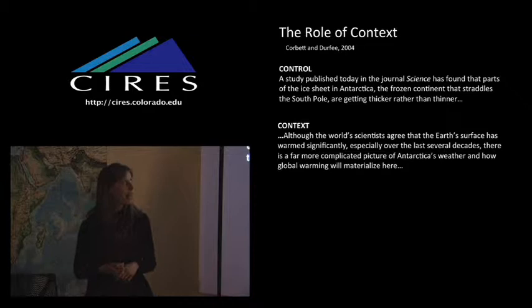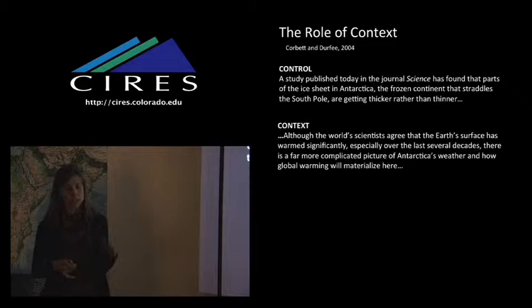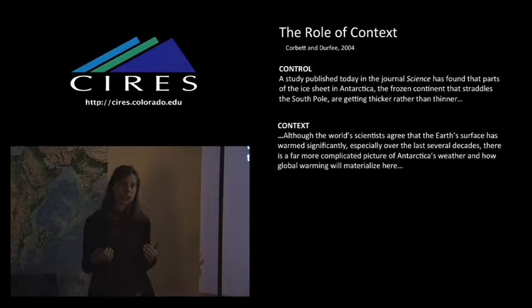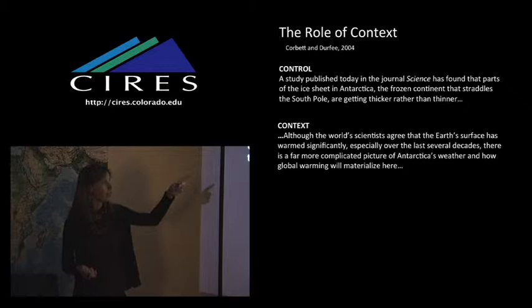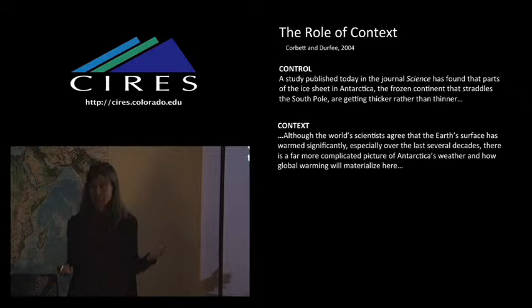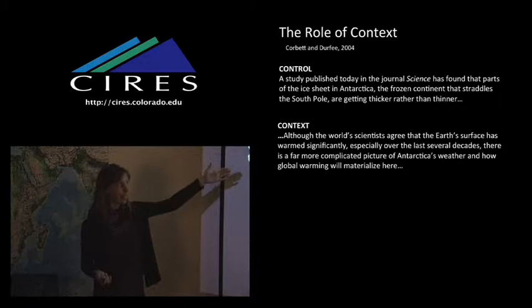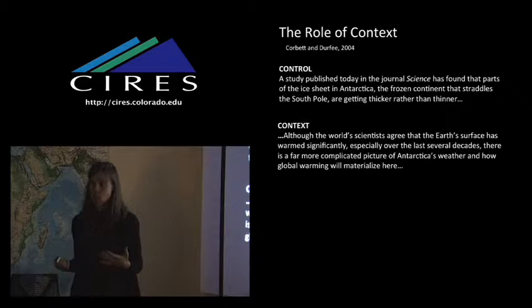And so there was another study done by Corbett and Durfee. And I think Durfee is now actually at CSU, but this study was done, I think, when she was at Utah. So this was done in 2004. What they had done here, very similar to the Wilson study, is they interviewed groups of students at the university. And what they did was very clever. They gave them a news article, which started with this lead. So a study published today in Science has found that parts of Antarctica, the frozen continent, are getting thicker rather than thinner. So maybe we're wrong about climate change. Most of the stories did not contain any real additional scientific info. That was the control group. Then they gave a group of students the same study, but they added a whole paragraph that explained why Antarctica is getting colder and thickening rather than showing the same kind of melting and warming that we're seeing in other parts of the world.